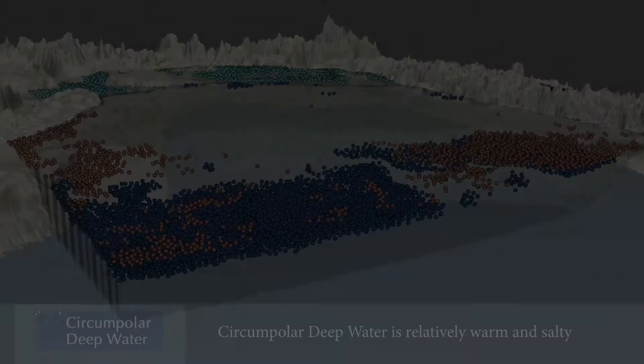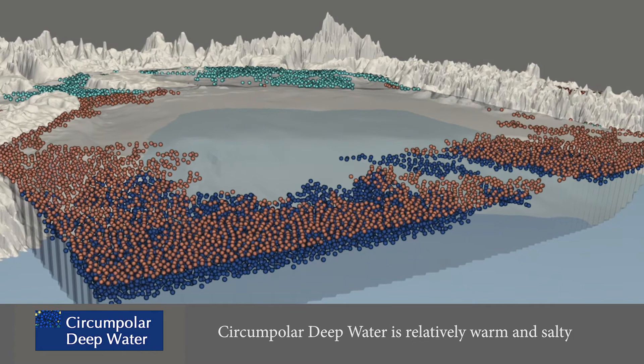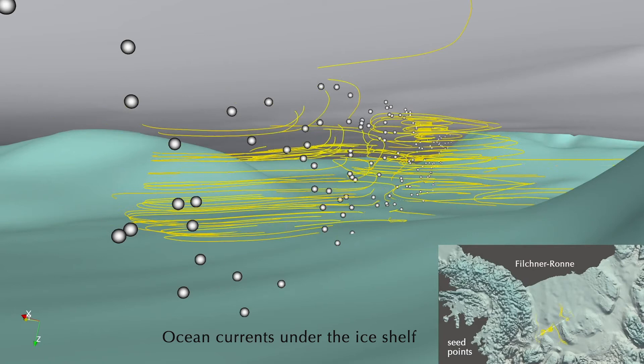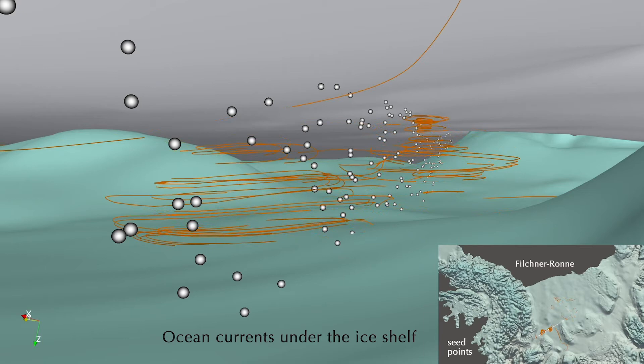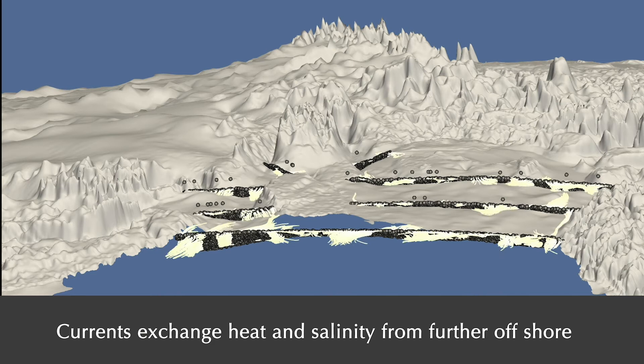One powerful water mass is circumpolar deep water. Relatively warm and salty, it circulates around Antarctica just off the continental shelf. As it mixes with water masses closer to the ice shelf, currents push the water beneath the shelf where it melts the ice above. Trenches, inlets, and islands increase the likelihood of such occurrences. The Filchner-Ronne ice shelf overlays many of these features, which direct ocean currents through their cavities, melting the ice. Here we can see the currents circulating off the coast, exchanging heat and salinity from further offshore.